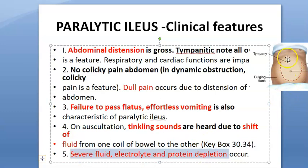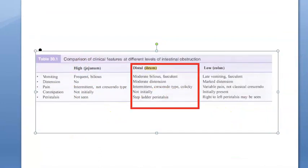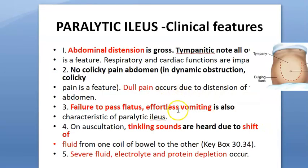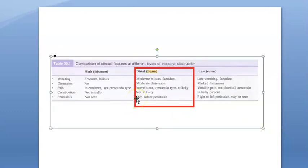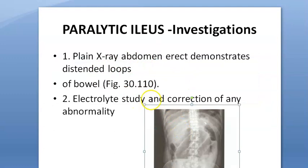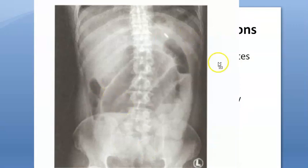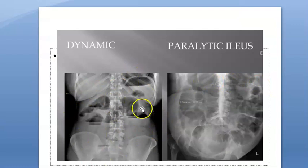Comparing features: vomiting is present, distension yes, pain is dull, and constipation is not there initially — patients cannot even pass flatus. Peristalsis will not be visible since it is paralytic ileus. On X-ray, you will see distended loops. Unlike mechanical obstruction where you see air-fluid levels, in paralytic ileus you see the sentinel loop sign instead.